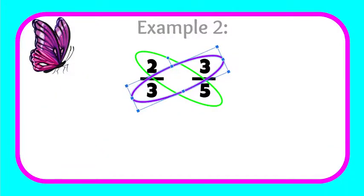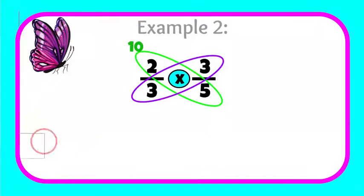So now let's multiply our wings. Two times five is ten. And three times three is nine.